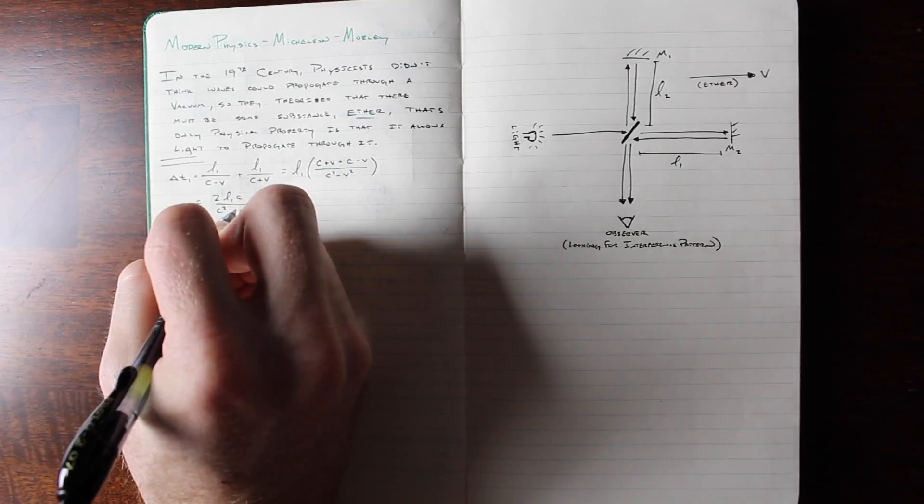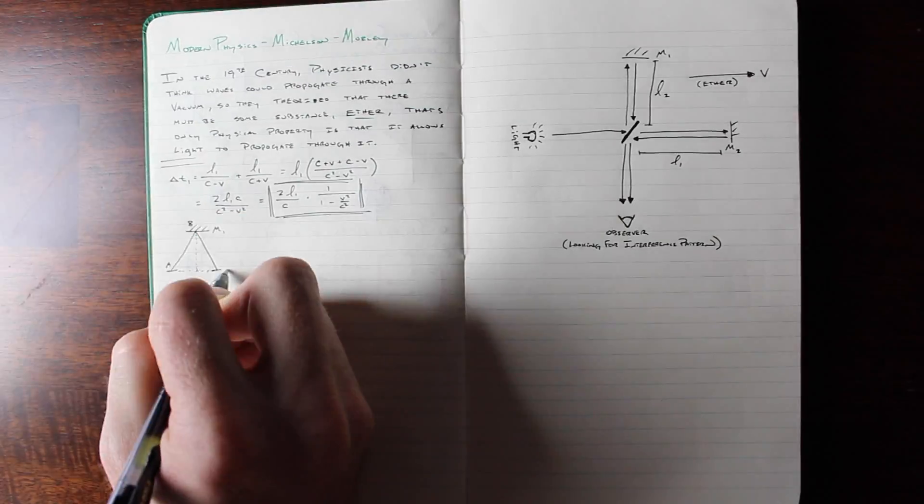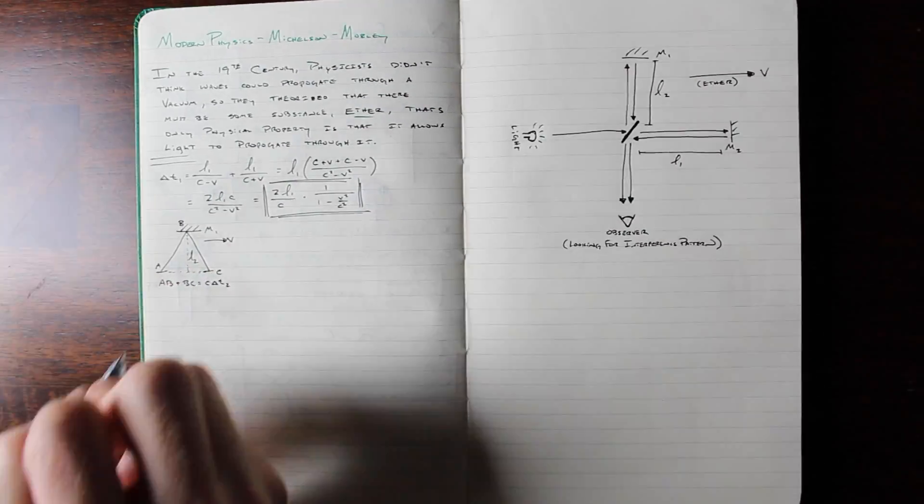For the second time, because the distance to the other mirror is perpendicular to the velocity, the light would hypothetically be traveling a greater distance as defined by this triangle to return to the half-silvered mirror.